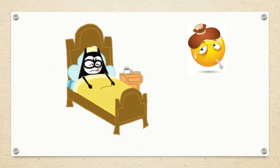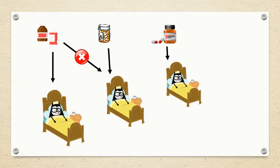Medicine is a type of drug which cures the person who is having a specific disease. A specific medicine is given for a specific disease and a specific person.